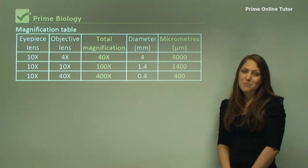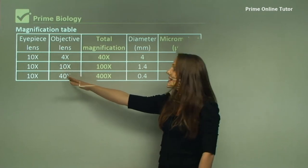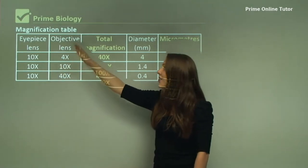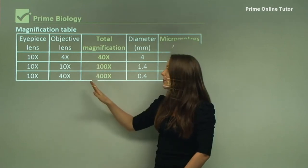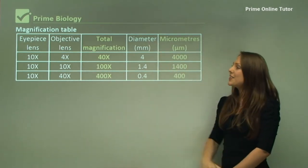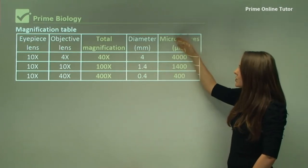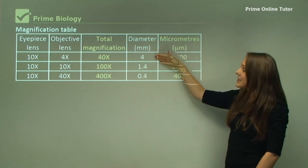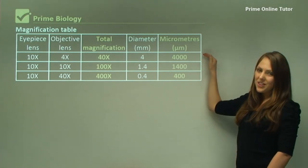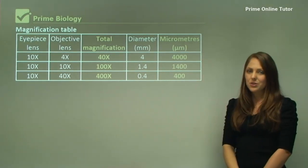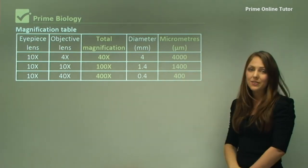This magnification table is really important to understand and to know. As I said before, the eyepiece lens is 10 times magnified. The objective lens is 4 times, 10 times, and 40 times magnified. The total magnification is 40, 100, and 400 times. When we work out the diameter, it's 4 millimeters, 1.4, and 0.4. In micrometers, it's 4000, 1400, and 400. These are the actual numbers that you're going to be working with, the diameters for each total magnification.